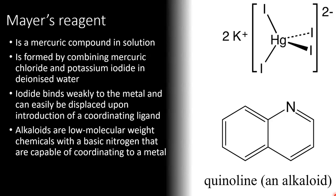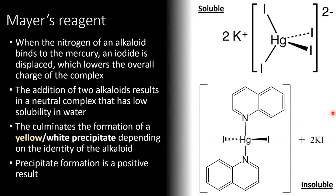Alkaloids are low molecular weight chemicals with a basic nitrogen group that is capable of coordinating to a metal. The example shown on the right is quinoline, which is one of the simplest alkaloids, whereby we have a basic nitrogen atom shown here. When the nitrogen of the alkaloid binds to the mercury, an iodide is displaced, which lowers the overall charge of the complex. The addition of two alkaloids results in a neutral complex that has low solubility in water, culminating in the formation of a yellow to white precipitate depending on the identity of the alkaloid. This precipitation event is what's considered a positive result for Mayer's Reagent.